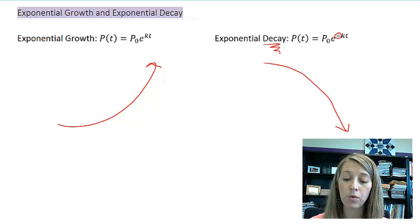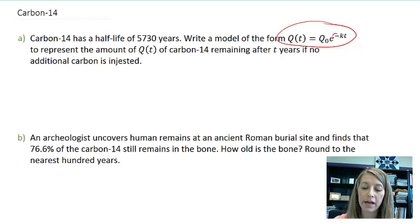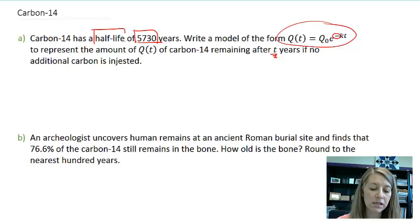And so the application that we will use of this, there's many of them, but the one that we're going to do here in this example is carbon-14 data. It tells us that carbon-14 has a half-life of 5,730 years. And so we basically want to write an equation using the formula that we just saw. Instead of p's, it's using q's, no different. This is a decay function because an item loses carbon-14 as we increase in time. And so that's why we have a negative exponent for exponential decay.